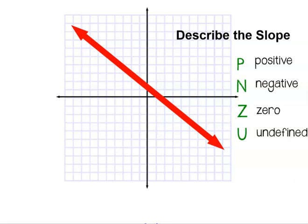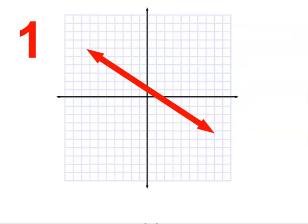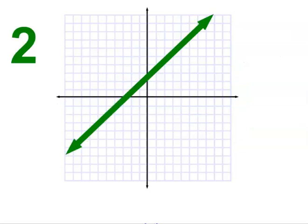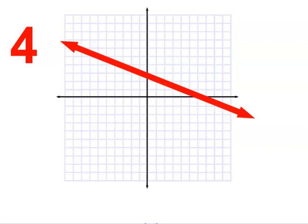Next example, positive. All right, here we go. Negative. Negative. Positive. Zero. Negative.